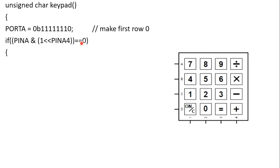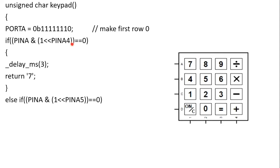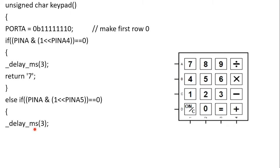If the result is not 0, key 7 was not pressed. Then: else if (PINA & (1 << PA5)) == 0 means the second key (8) was pressed — return '8' after debounce delay. else if (PINA & (1 << PA6)) == 0 means the third key (9) was pressed — return '9'. If none of the first three match, check (1 << PA7) — if 0, the fourth key (division '/') in the first row was pressed, and return its ASCII value.